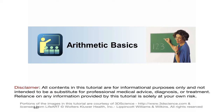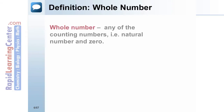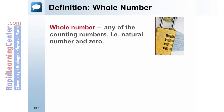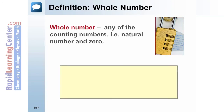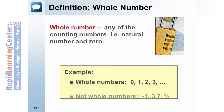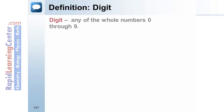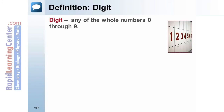The first section will discuss arithmetic basics. A whole number is any of the counting numbers. Examples of whole numbers include zero, one, two, three, and so on. Examples of numbers that are not whole numbers include negative one, three and seven-tenths, and three-fourths.